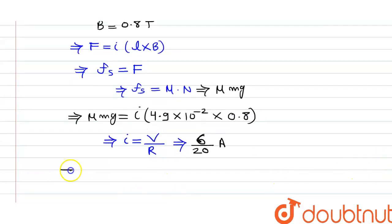So we can put value of current in the equation above. So we can get μ. What is the mass of the wire? It is 10 gram.